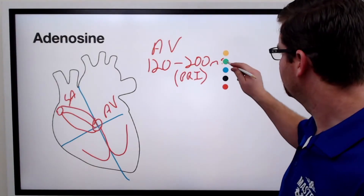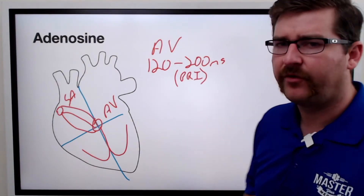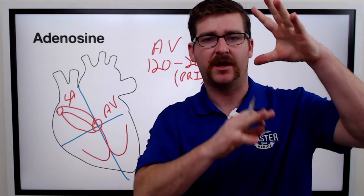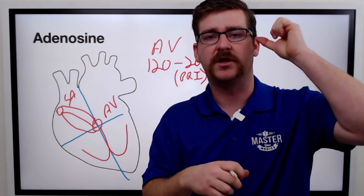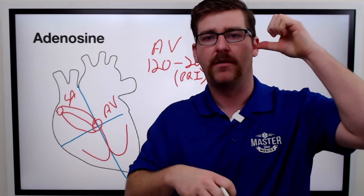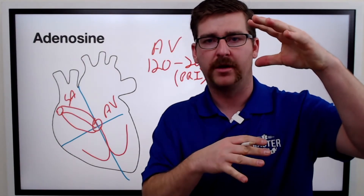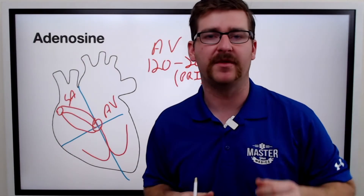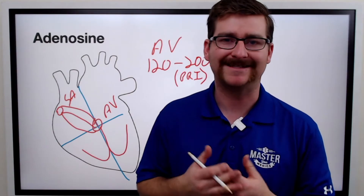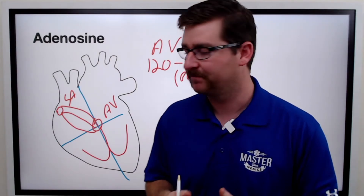The reason for the AV node is to separate the top and the bottom of the heart, so we get a bump-bump, bump-bump, instead of both the top and the bottom firing at the exact same time.